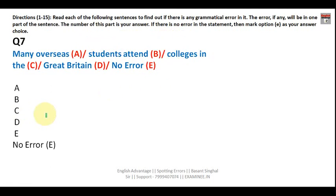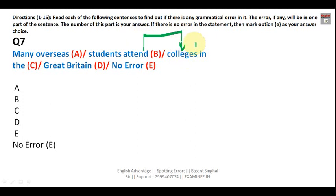Question seven: 'Many overseas students attend colleges in Great Britain.' The correct phrase is 'attend college' — similar to 'attend school.' It should be 'attend college,' not 'colleges.' Your answer is C.